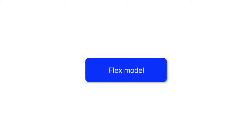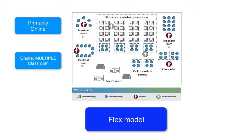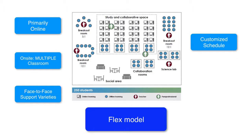Next, we have the FLEX model. Here is a diagram of the FLEX model. This is based on how the San Francisco FLEX Academy implements the FLEX model into their curriculum. You can learn more about their blended learning profile on the Clayton Christensen Institute website. Learning is done primarily online in this model, and it occurs on-site in multiple classrooms. With a variety of face-to-face support — from minimal support in some cases to more in others — students are placed in an individually customized, fluid schedule as they go through the different learning modalities.